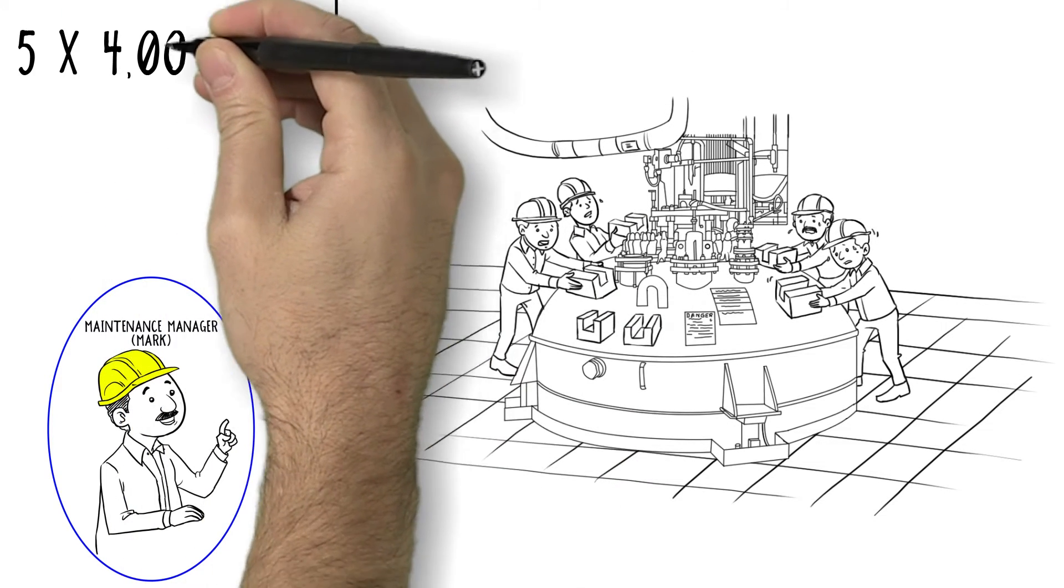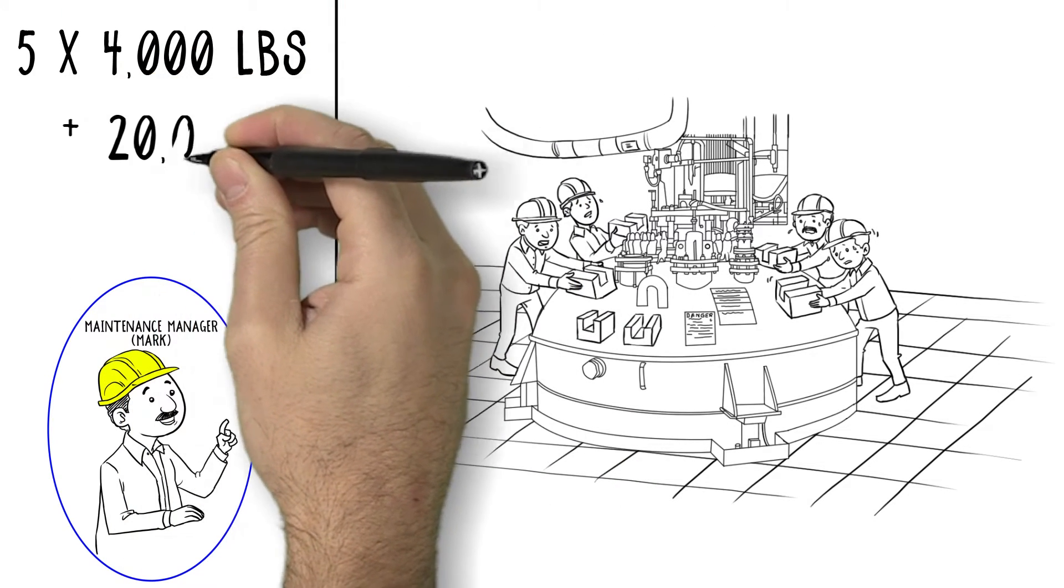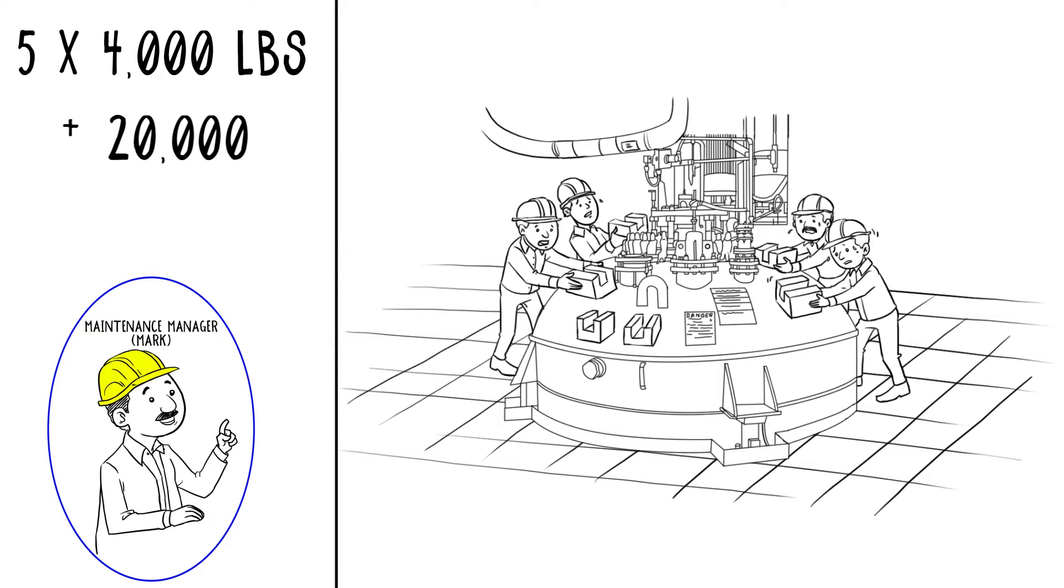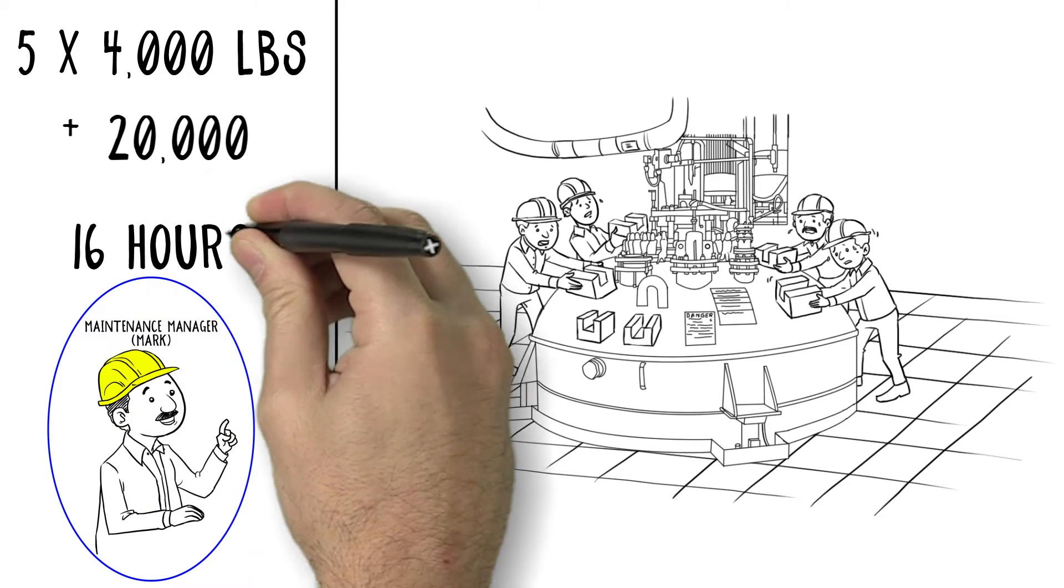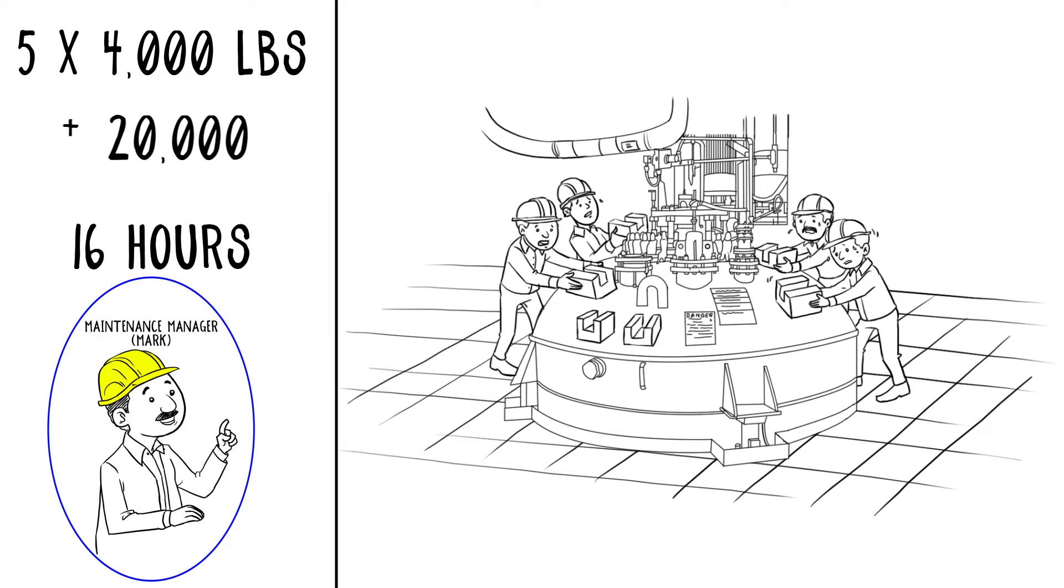There were five 4,000-pound scales and one 20,000-pound scale in each system. It takes us 16 hours to load test weights, calibrate, and validate all five scales. We have to load and unload the test weights, which takes time and raises safety concerns. It can't be rushed.